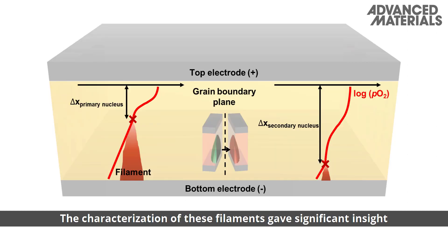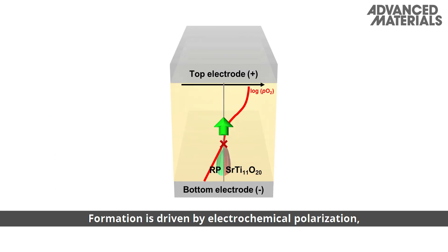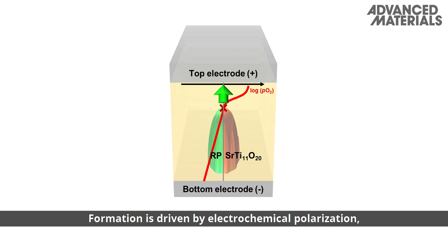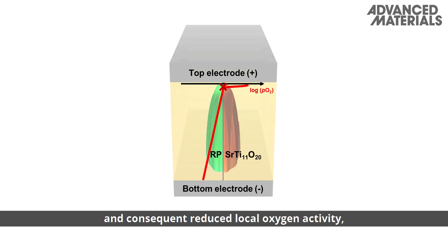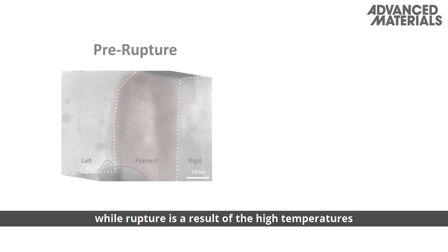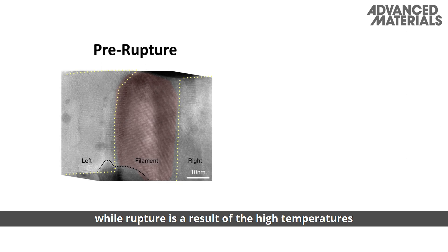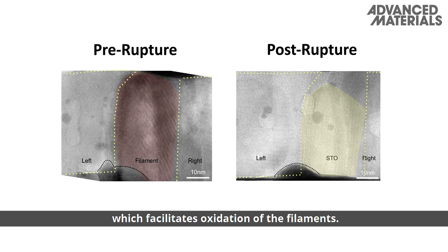The characterization of these filaments gave significant insight into the mechanisms of their formation and rupture. Formation is driven by electrochemical polarization and consequent reduced local oxygen activity, while rupture is a result of the high temperatures caused by large localized current density, which facilitates oxidation of the filaments.